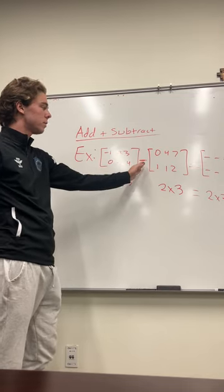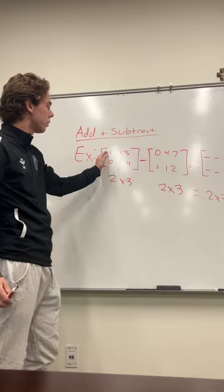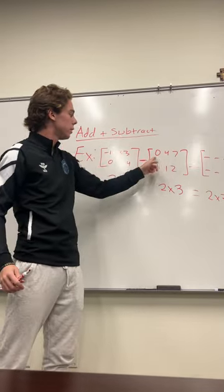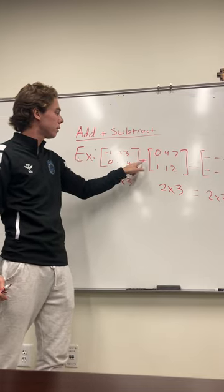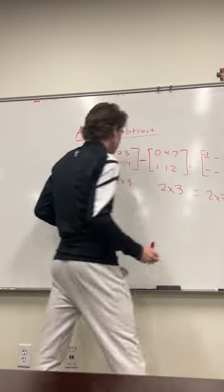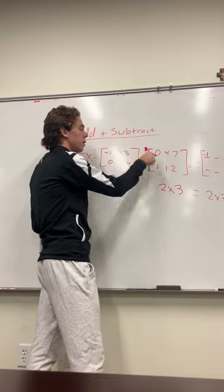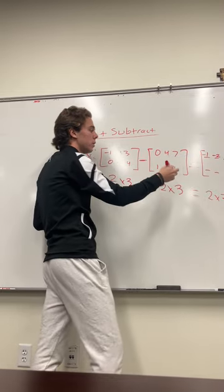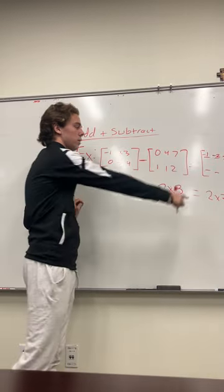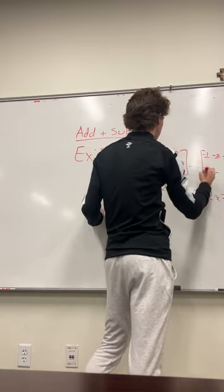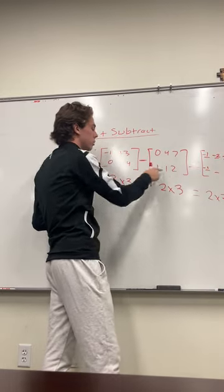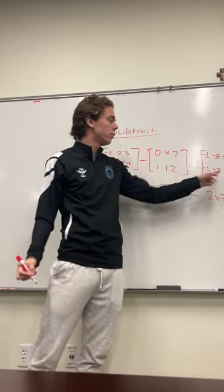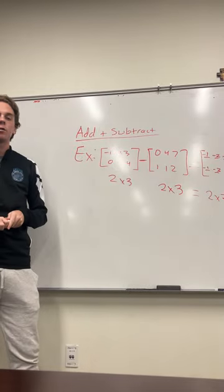We're going to do the same thing except we subtract the numbers instead of adding them. First spot: negative 1 minus 0 gives negative 1. Second entry: 2 minus 4 is negative 2. Third entry: 3 minus 7 is negative 4. Next: 0 minus 1 is negative 1. Then: negative 2 minus 1 is negative 3. And lastly: 4 minus 2 gives 2. That's how you go about subtracting two matrices.